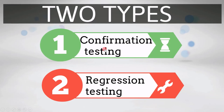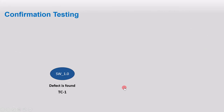The two types are confirmation testing and regression testing. I will explain the concept of confirmation testing and regression testing and then we will see the technical definition. Let's first understand confirmation testing.